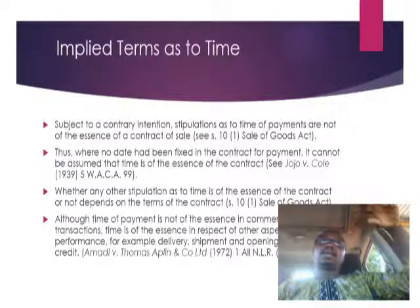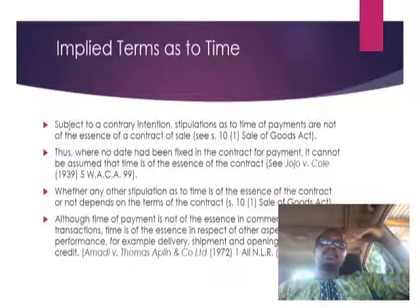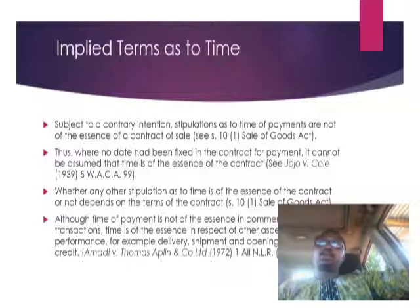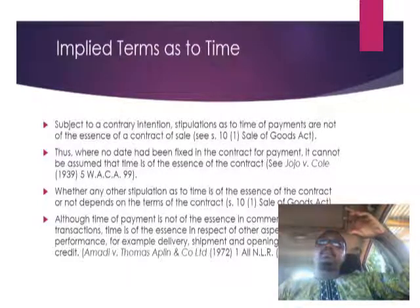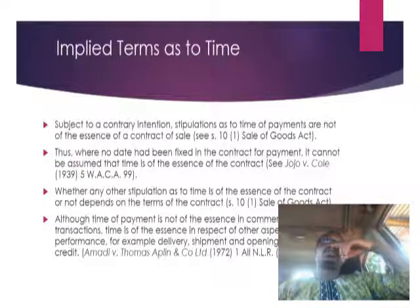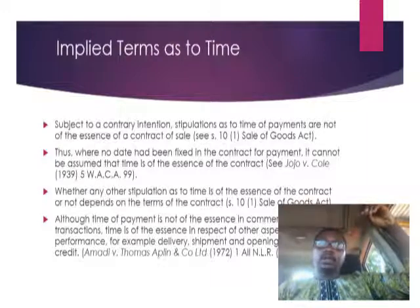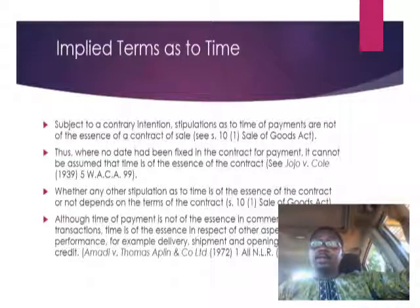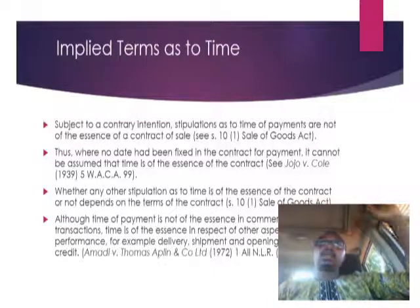When we talk about a fundamental term, we mean terms that are essential to the main purpose of the contract. Where a term is not of the essence, it means it is not essential to the main purpose of the contract — it is merely collateral. So paying at a particular time is merely collateral to the main purpose. If there is a violation of a stipulation as to time of payment, the only remedy available will be damages — the seller can recover the amount of money and claim damages, but cannot repudiate the contract.